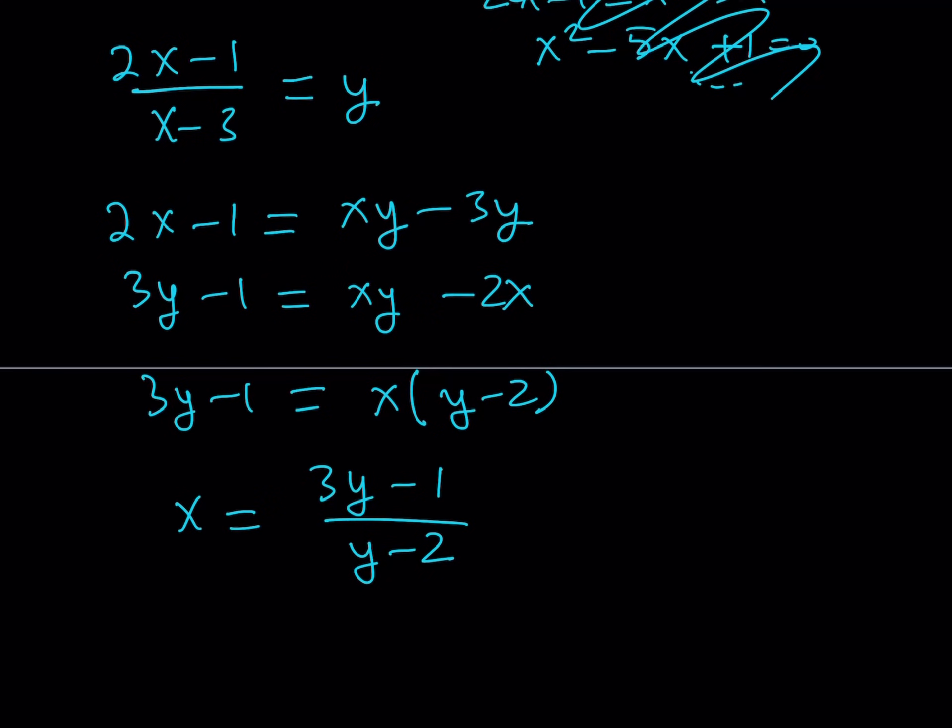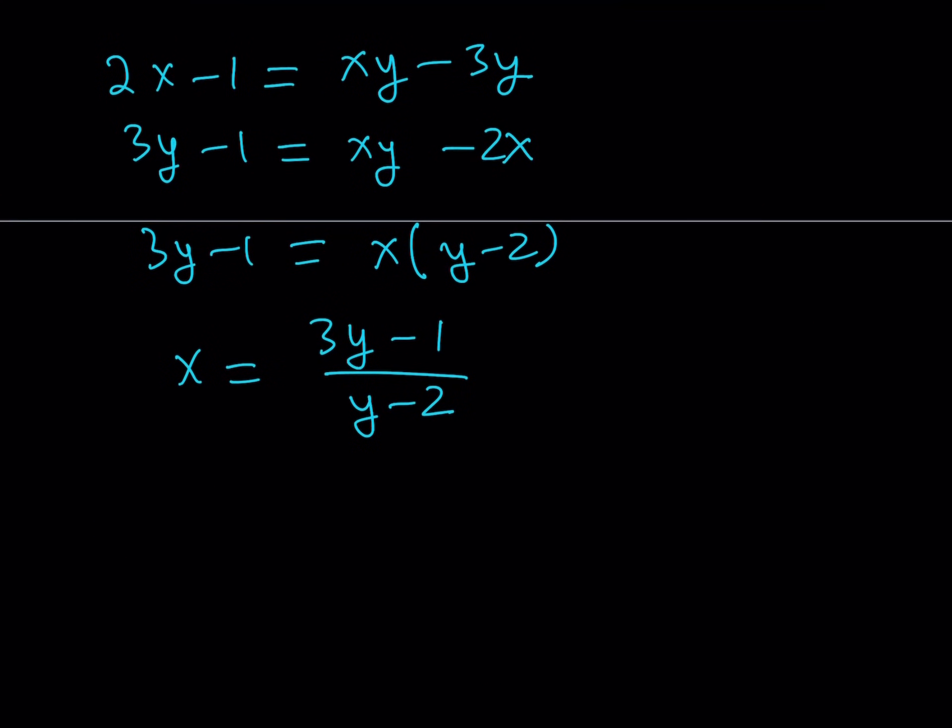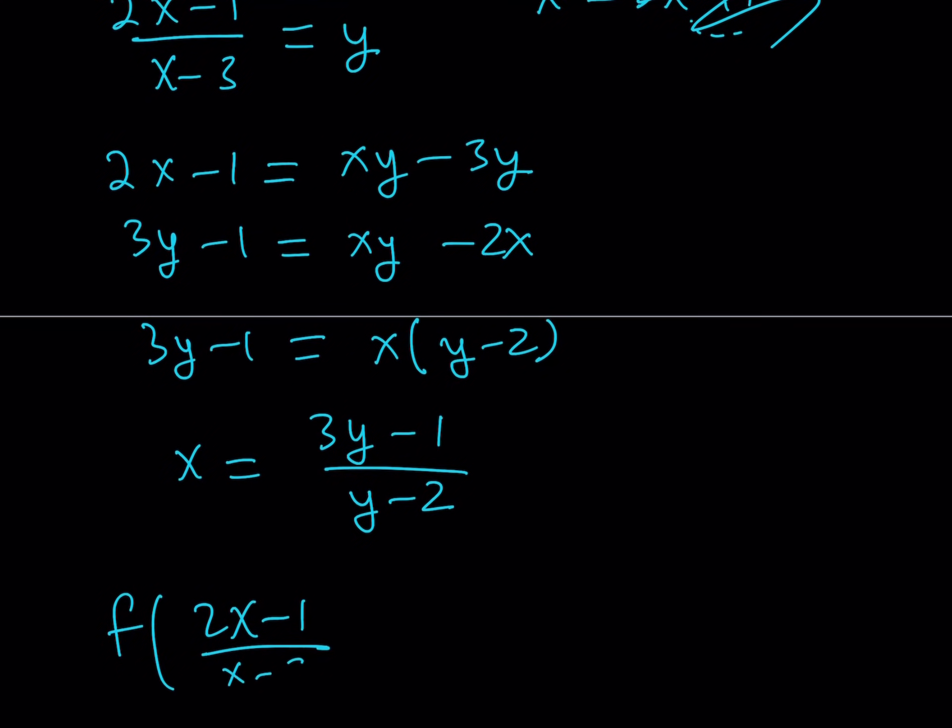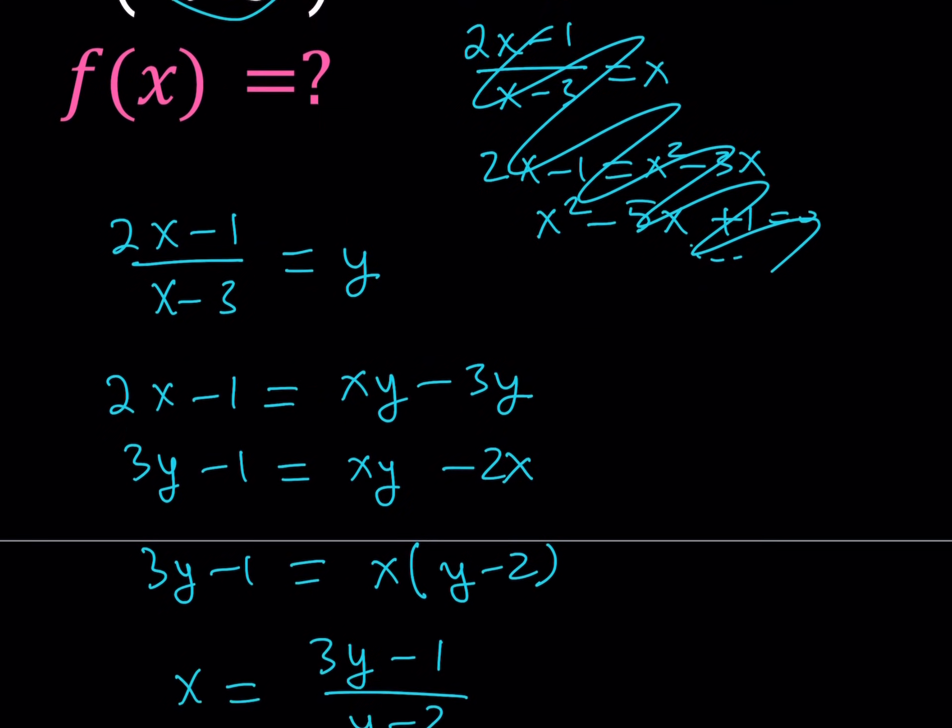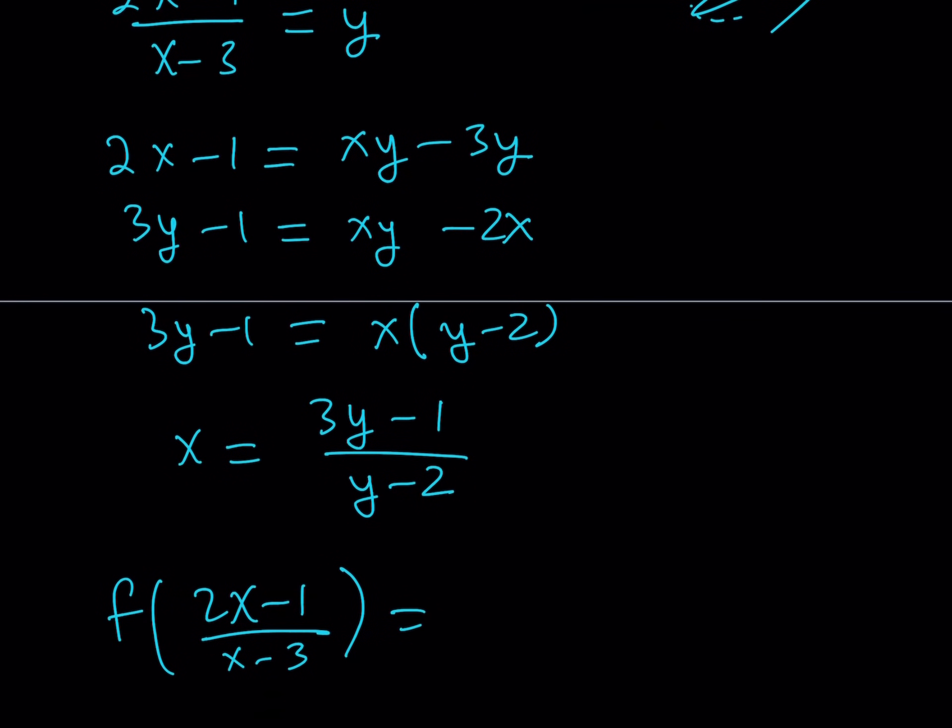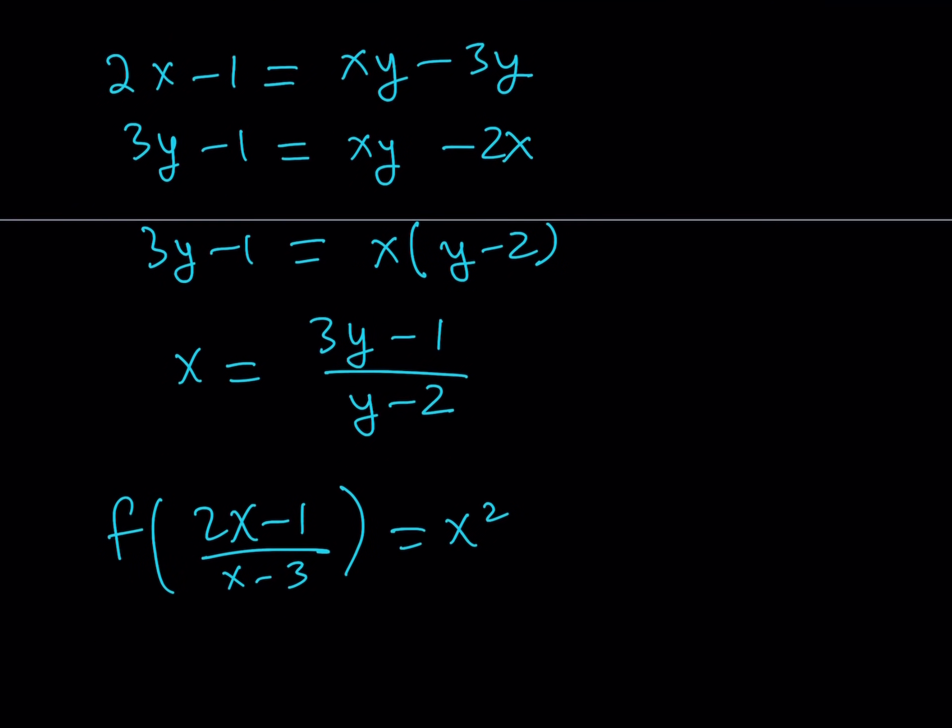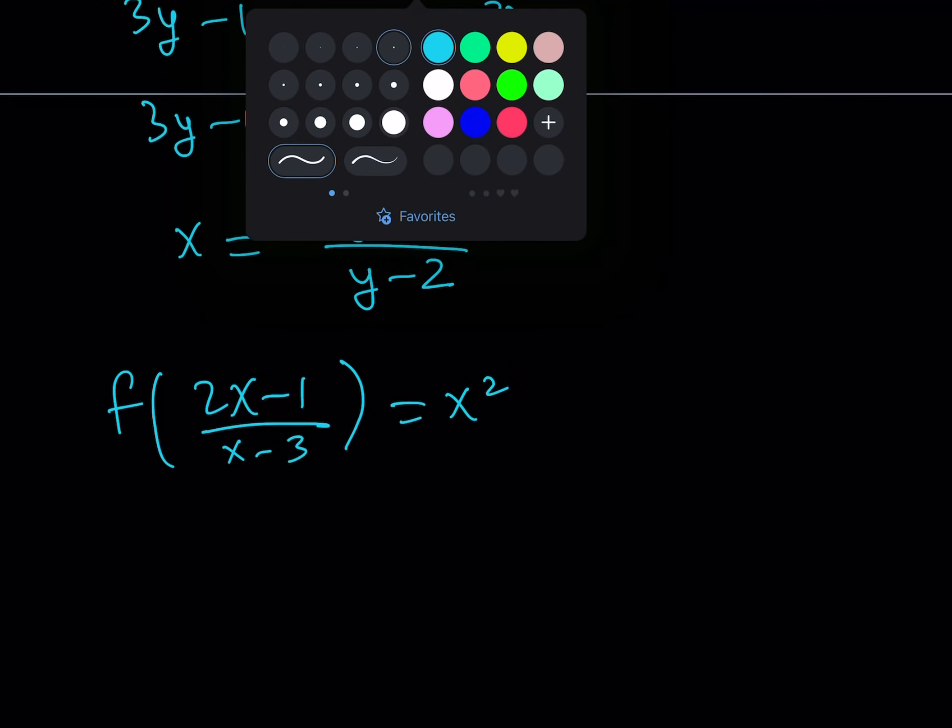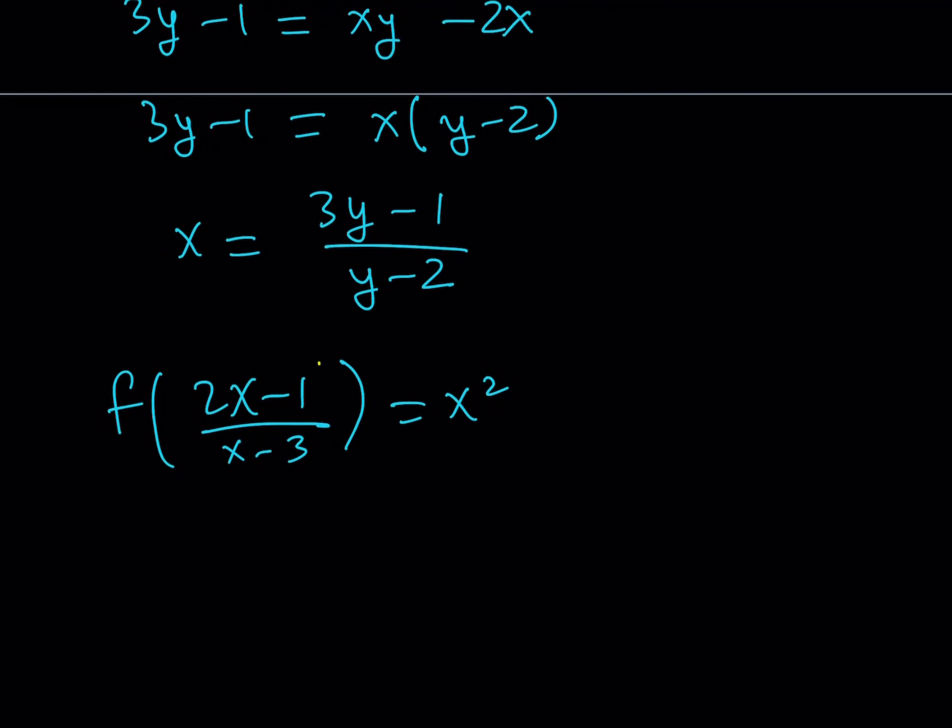So our original expression, if you remember, it was f of 2x minus 1 over x minus 3 is equal to x squared, right? And I was trying to find f of x here. Now, I noticed that by replacing this with y, I'm basically replacing x with this. So let's go ahead and replace x with this on the right-hand side.